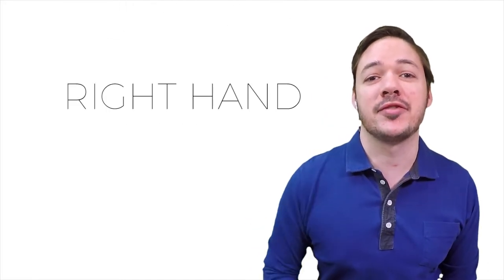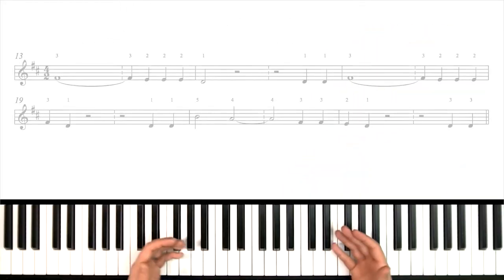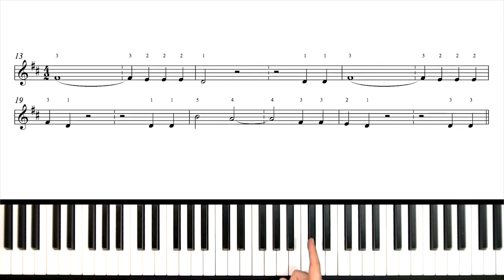I'm going to start with the right-hand melody for this verse. Let's go. First, let's take a look at the key signature and the time signature. The key signature says two sharps, F sharp and C sharp. That tells us we're in the key of D major.